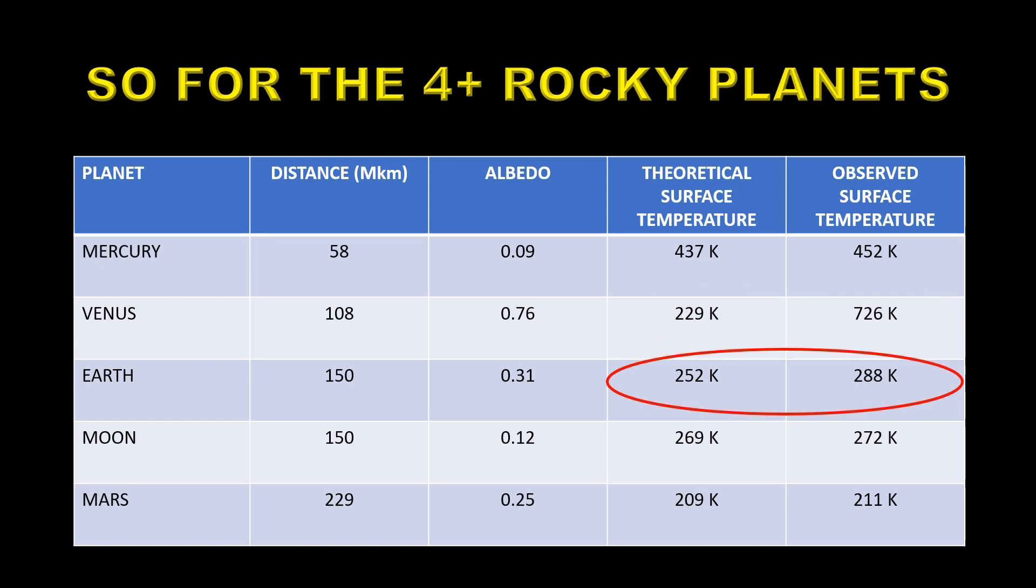The Earth is slightly warmer than it should be by 30 odd degrees but that's because it has a moderate atmosphere with just a little bit of carbon dioxide in it. The Moon which has no atmosphere is basically the same temperature, 269 versus 272, and Mars is very similar as well, it has a very tenuous atmosphere.